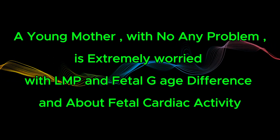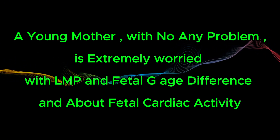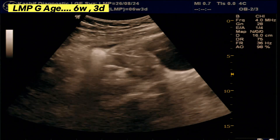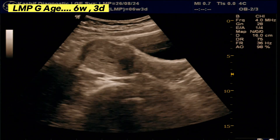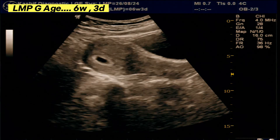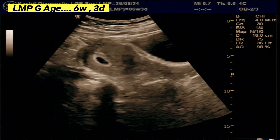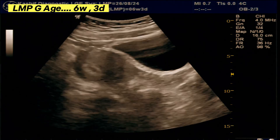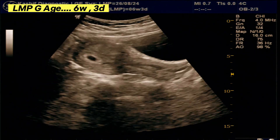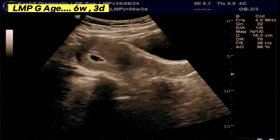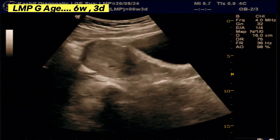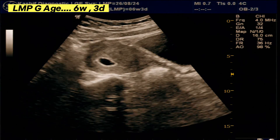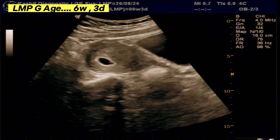The gestational age according to LMP is 6 weeks and 3 days. There are a lot of variations — LMP is sometimes not correct. The ultrasound-measured gestational age may be less when compared to LMP, and this may be normal. But most young females are highly worried about this.